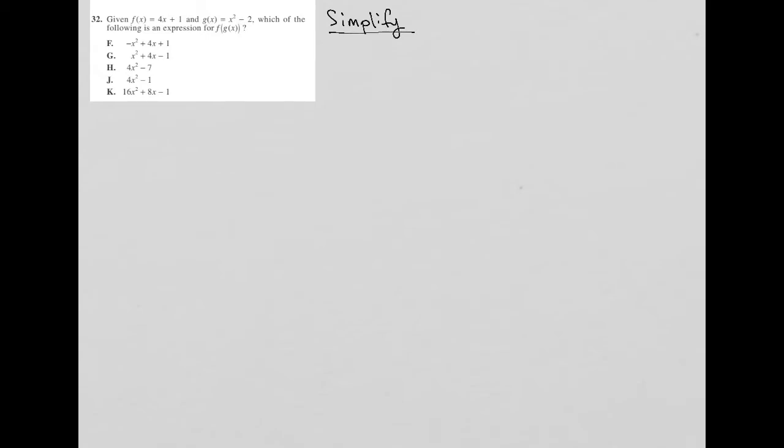So let's figure out what we're given and what we are asked to find, which I'll represent as a question mark. We're given that f of x equals 4x plus 1, and g of x is equal to x squared minus 2. The question asks, which of the following is an expression for f of g of x? So that's what we're trying to find, f of g of x.